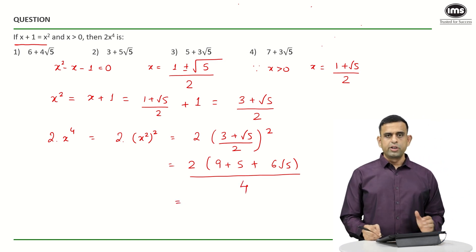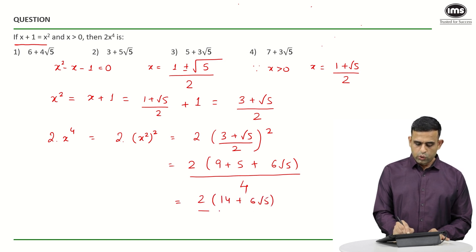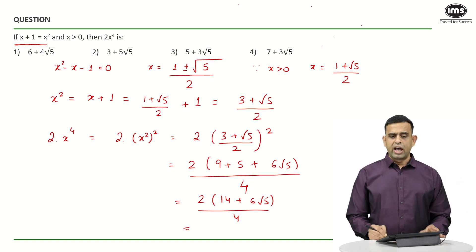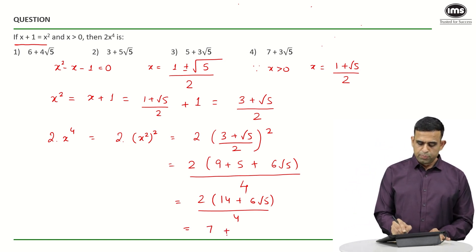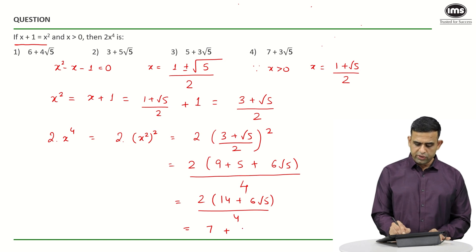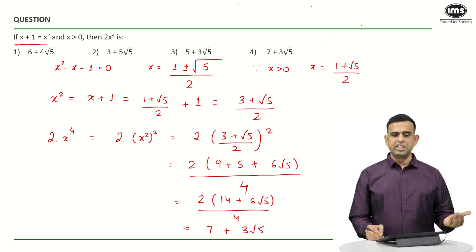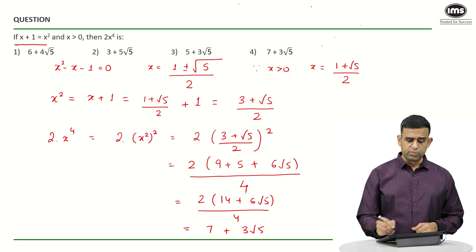Looking at the numerator, 2 times 14 plus 6 root 5, divided by 4, which simplifies to 28 over 4 giving 7, plus 12 root 5 divided by 4 giving 3 root 5. So again we get the same answer, and the answer is option number 4.